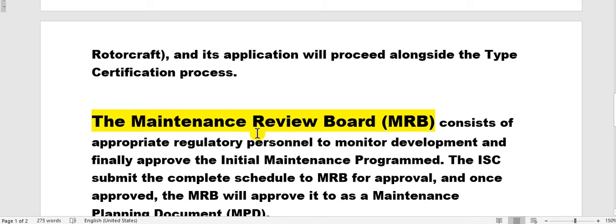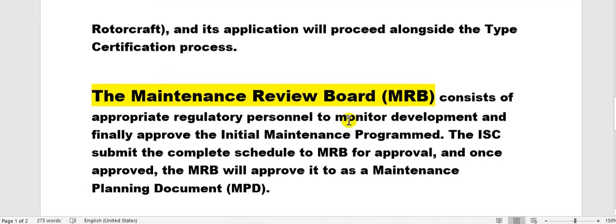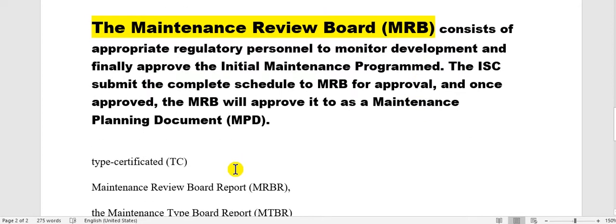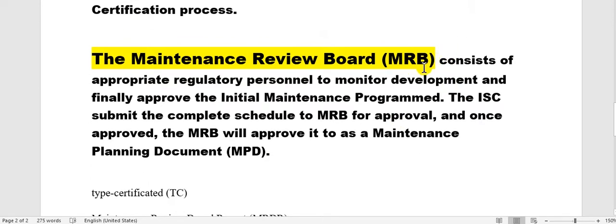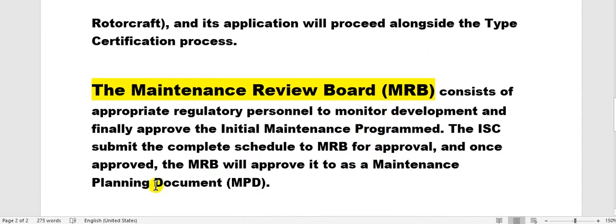The MRB is the Maintenance Review Board — adding 'R' means report, so this board issues a report. The MPD is the Maintenance Planning Data. The manufacturer issues and distributes the MPD to operators, but the MRB report comes from the civil aviation authority of the manufacturer's country, like the FAA in the US or EASA in Europe, as a guide to collect the MPD tasks.